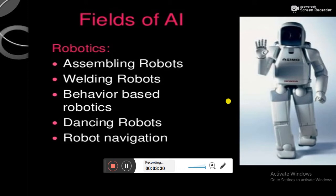Another field of artificial intelligence is robotics, which includes assembling boards, welding boards, behavior-based robots, dancing robots, and robot navigation.